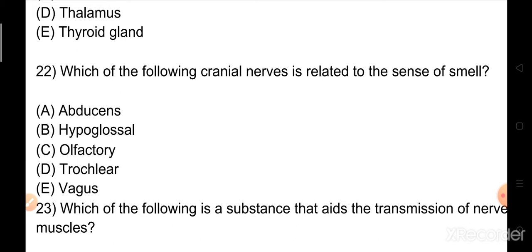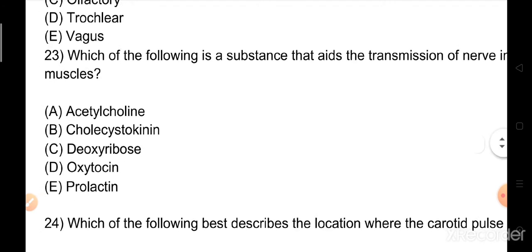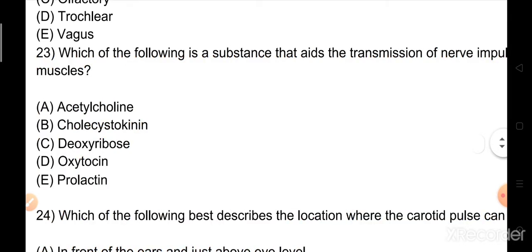Question number 22: Which of the following cranial nerves is related to the sense of smell? Options: A) abducens, B) hypoglossal, C) olfactory, D) trochlear, E) vagus. The right answer is option C, olfactory.